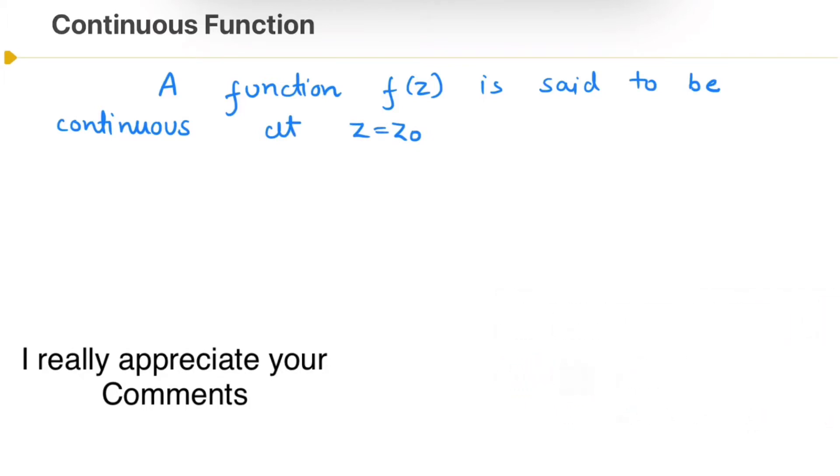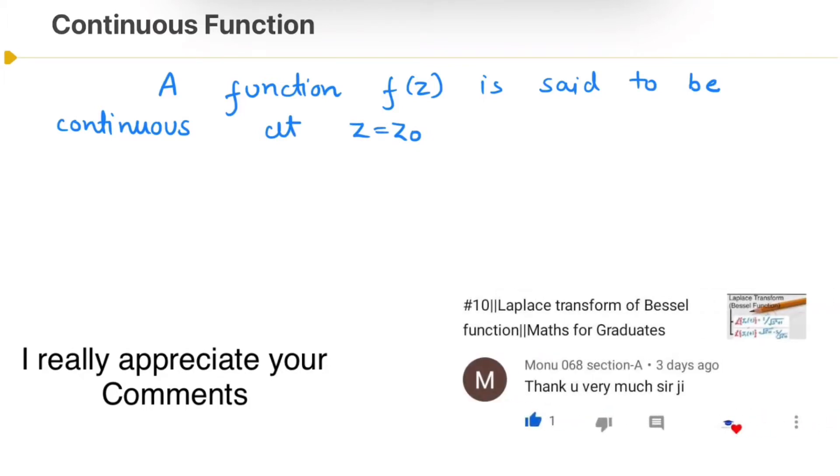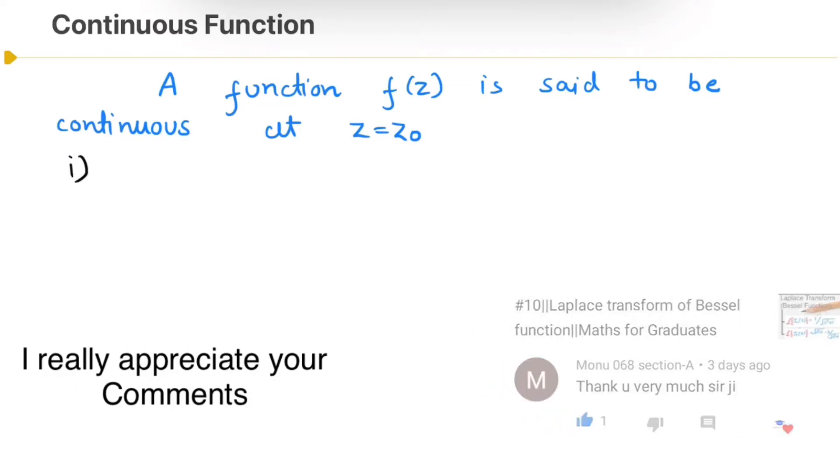First, f(z₀) exists, that is, f should be defined at z₀. And second, limit z tending towards z₀ of f(z) exists and it should be equal to f(z₀).